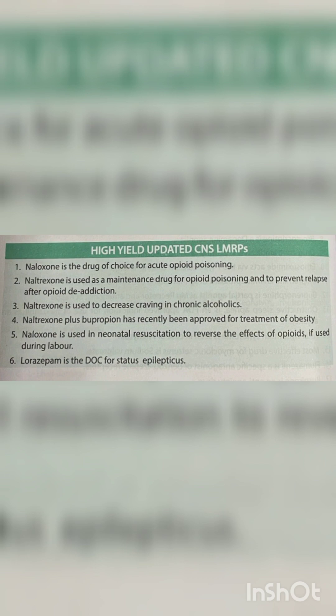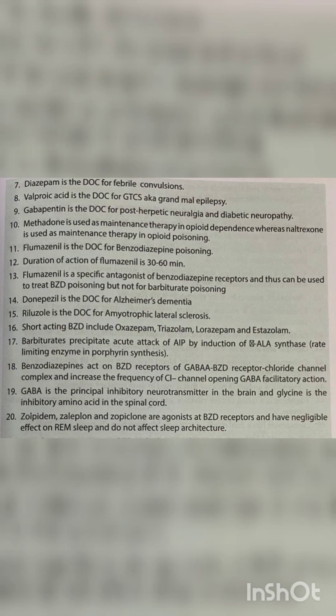Lorazepam is the drug of choice for status epilepticus. Diazepam is the drug of choice for febrile convulsions. Valproic acid is the drug of choice for GTCS, also known as grand mal epilepsy. Gabapentin is the drug of choice for post-herpetic neuralgia and diabetic neuropathy. Methadone is used as maintenance therapy in opioid dependence, whereas naltrexone is used as maintenance therapy in opioid poisoning.